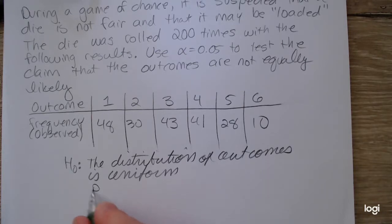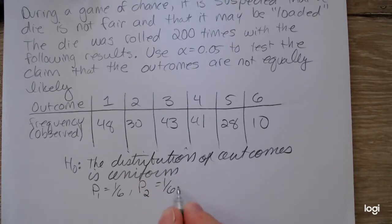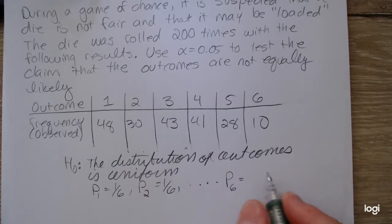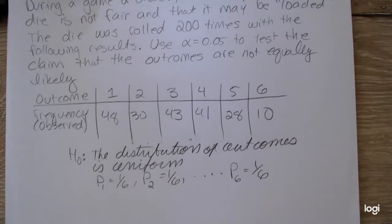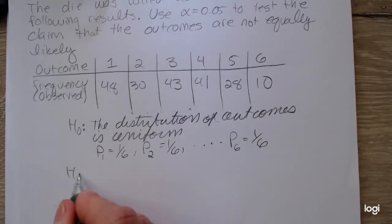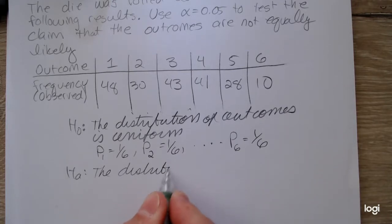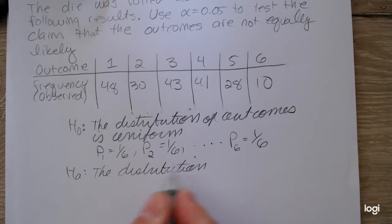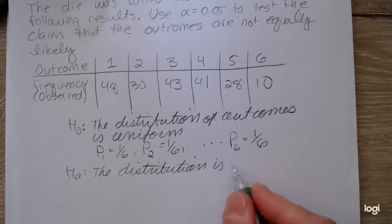So that would be the proportion for getting a 1 is equal to 1 out of 6. Proportion for getting a 2 is 1 out of 6, and so on. So the proportion for getting a 6 would be 1 out of 6, versus an alternative, that the distribution is not uniform.